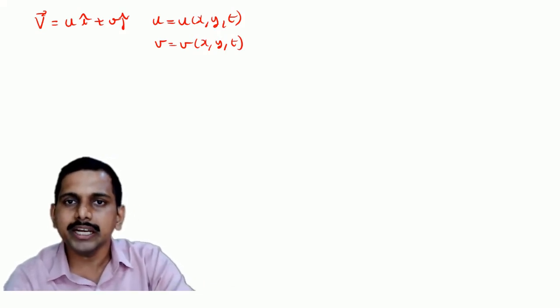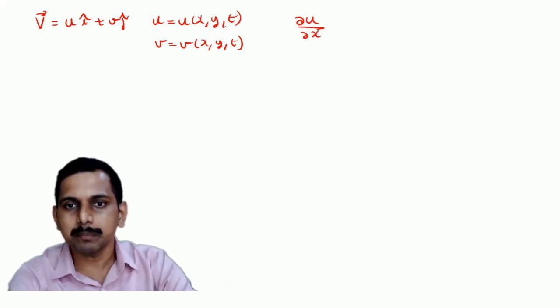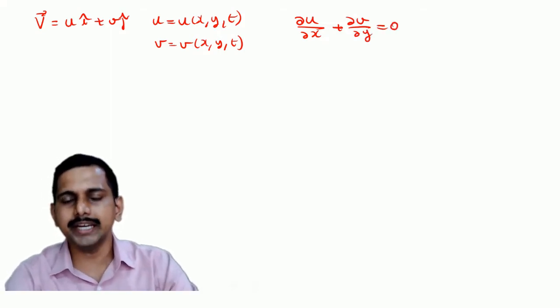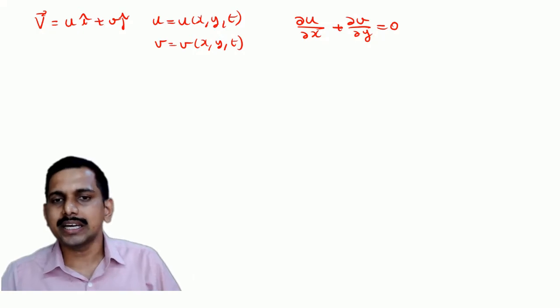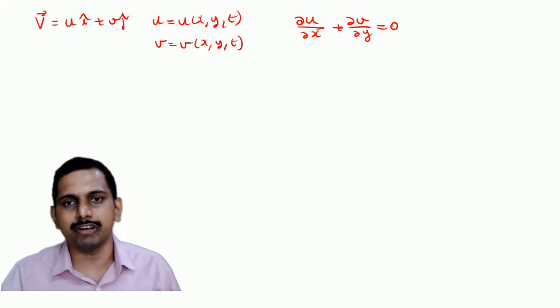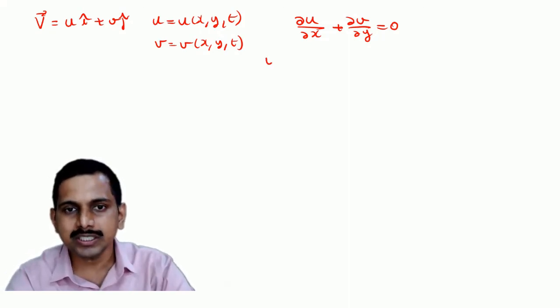Now if I write the continuity equation here, what is the continuity equation? ∂u/∂x plus ∂v/∂y is equal to 0. Now the idea of the stream function is that, can I represent u and v in terms of a single function? This is done by using stream function ψ.